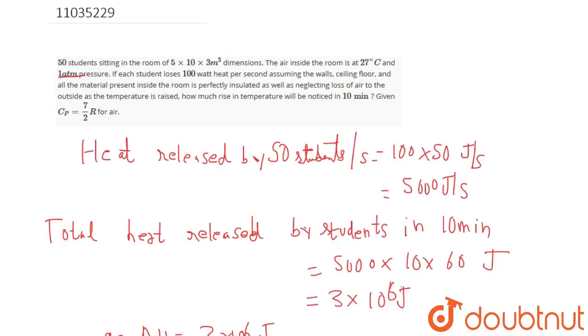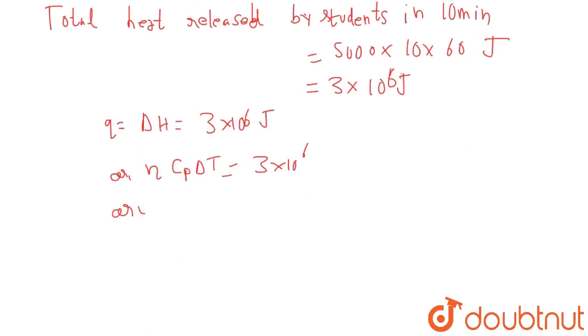Initial conditions are given - volume is given, temperature is given, pressure is given, so moles can be calculated by the formula PV by RT. And Cp is 7 by 2 R, R is 8.314, and we need to find change in temperature.